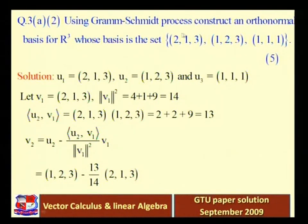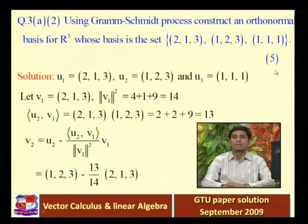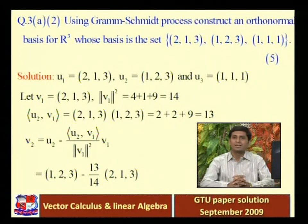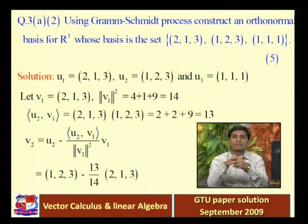Using the Gram-Schmidt process, construct an orthonormal basis for R³ where the basis is the set {(2,1,3), (1,2,3), (1,1,1)}. This question is worth 5 marks. We have three basis vectors of R³, and the Gram-Schmidt process is used to convert any basis vectors into orthogonal basis vectors.